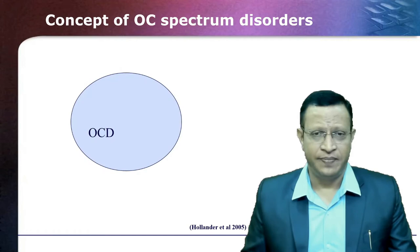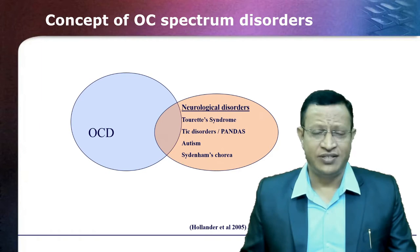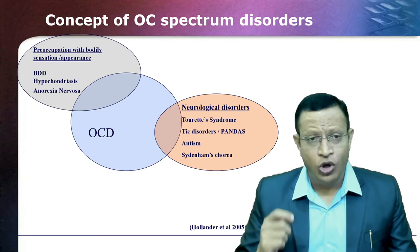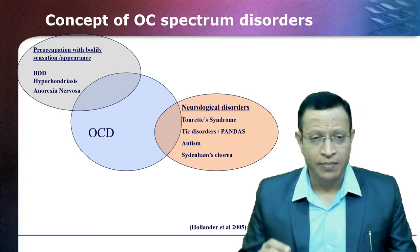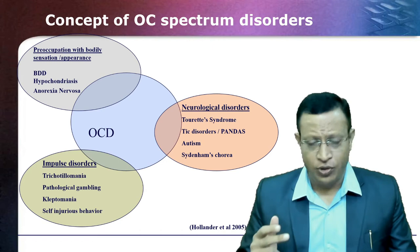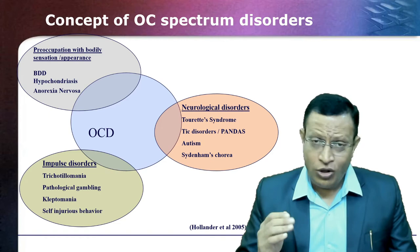Looking at OC spectrum disorders: on one end you can see neurological disorders such as Tourette's, tics, PANDAS, autism, and Sydenham's chorea. On the other end of the spectrum, there are preoccupations with body sensation and appearance — like BDD (body dysmorphophobia), hypochondriasis, and anorexia nervosa. Looking at impulse disorders: trichotillomania, pathological gambling, kleptomania, and self-injurious behavior. Hence, we need to know whether OCD patients also have comorbid OC spectrum disorders.